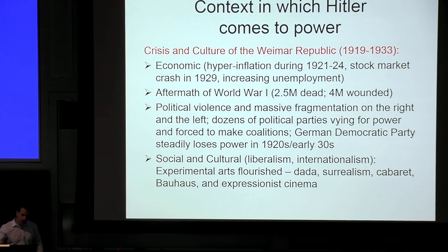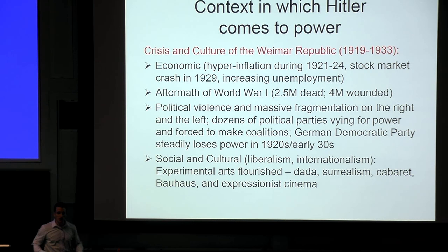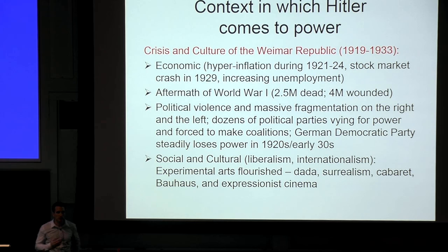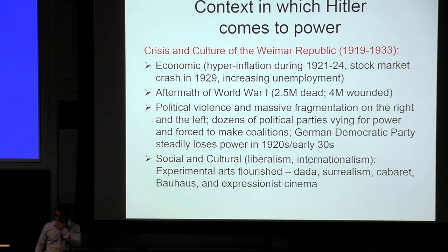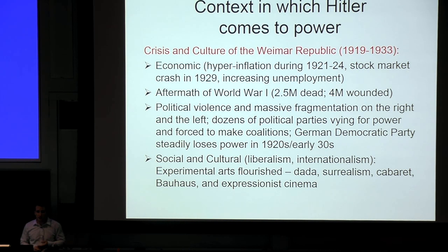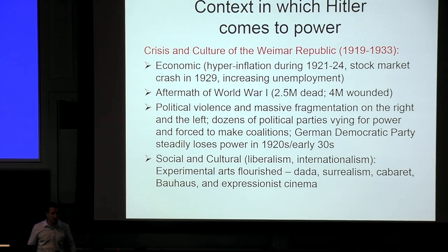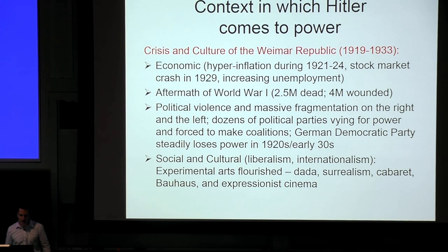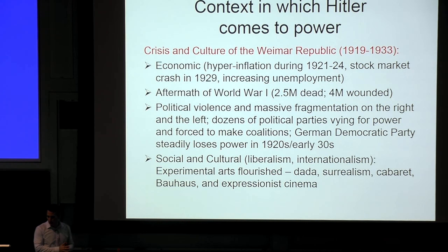Germany was not already a fascist Nazi state in the 1920s — in fact, quite the opposite. It was a democratic constitutional democracy called the Weimar Republic, named after where the constitution was drafted. The constitution preserved rights for citizens just like those in the United States: freedom to assemble, freedom of speech, due process, protection from unlawful imprisonment, equal creation, suffrage, and extension of rights for all citizens. That's the constitutional democracy that existed in the Weimar Republic between 1919 and 1933.